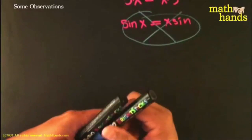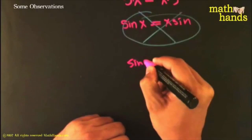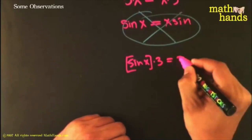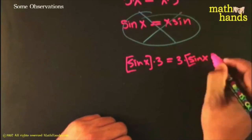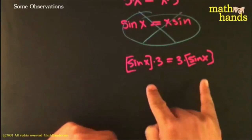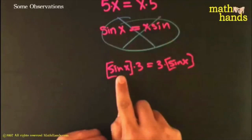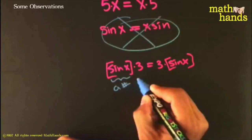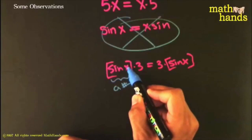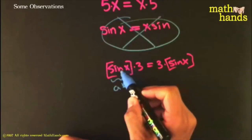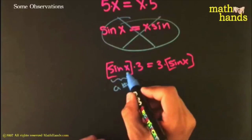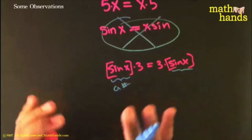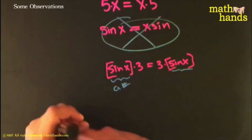Following that same theme - suppose you had sin(x) times 3: is that the same thing as 3 times sin(x)? That would actually be okay. That was not okay before, but this is okay because sin(x) is actually a number - it's a ratio you get when you find a reference triangle for x degrees and take the ratio of opposite to hypotenuse. It's actually a number, a ratio, so you can treat it like a number. Sin(x) is a number; sine by itself is not.